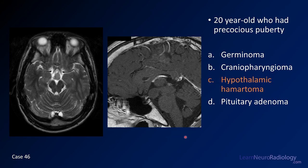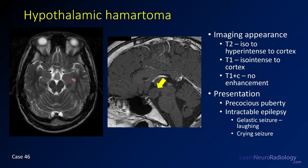This is a case of hypothalamic hamartoma. What you have is a T2 isointense to gray matter lesion in the hypothalamic region. On post-contrast imaging, it remains isointense to gray matter with not much enhancement. It's not centered in the infundibulum and not in the pituitary, so it's probably not an adenoma. A non-enhancing mass in this location is likely a hypothalamic hamartoma.